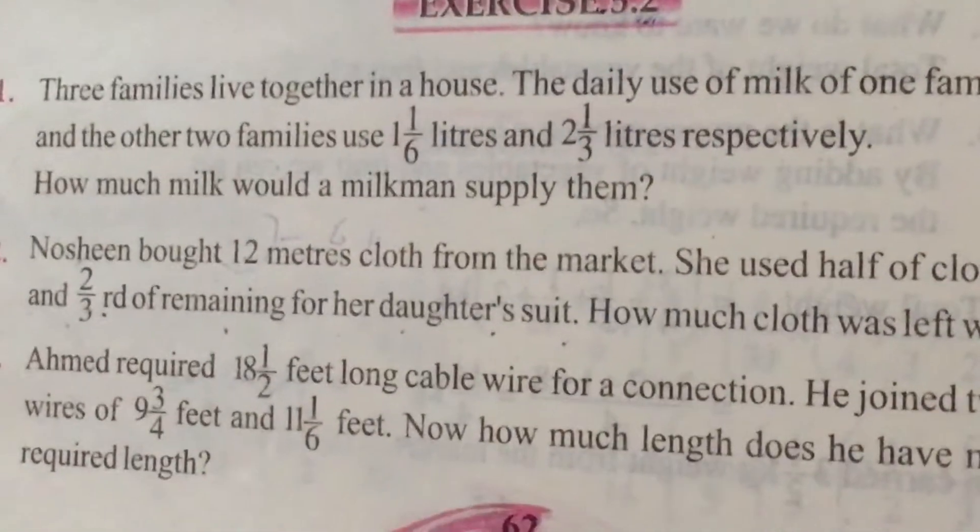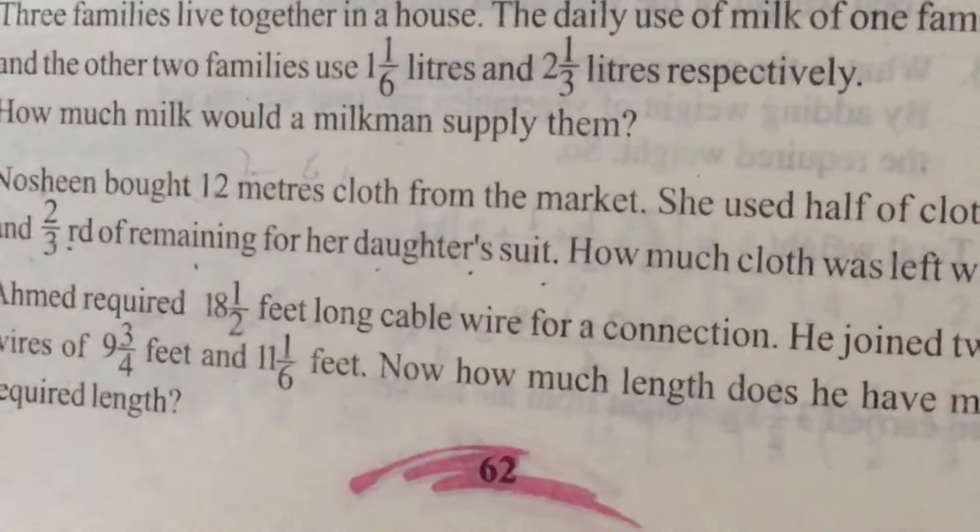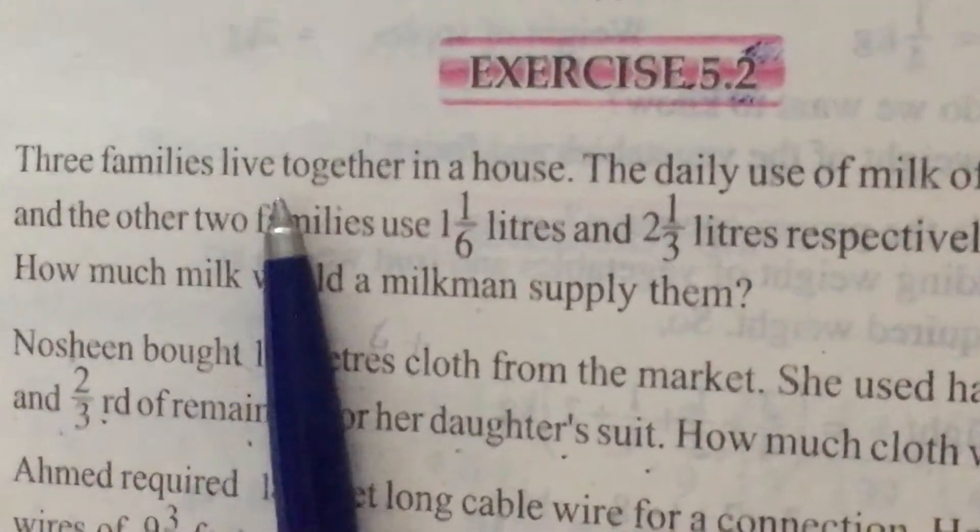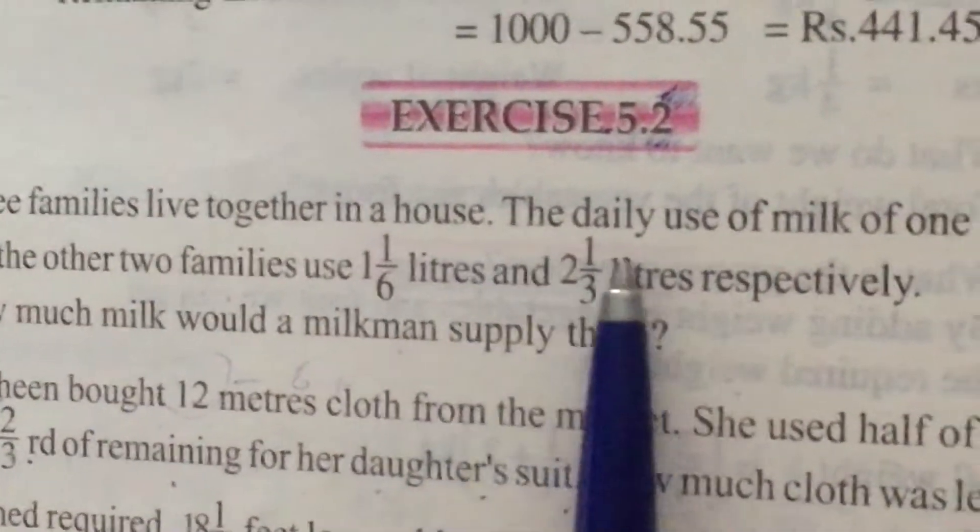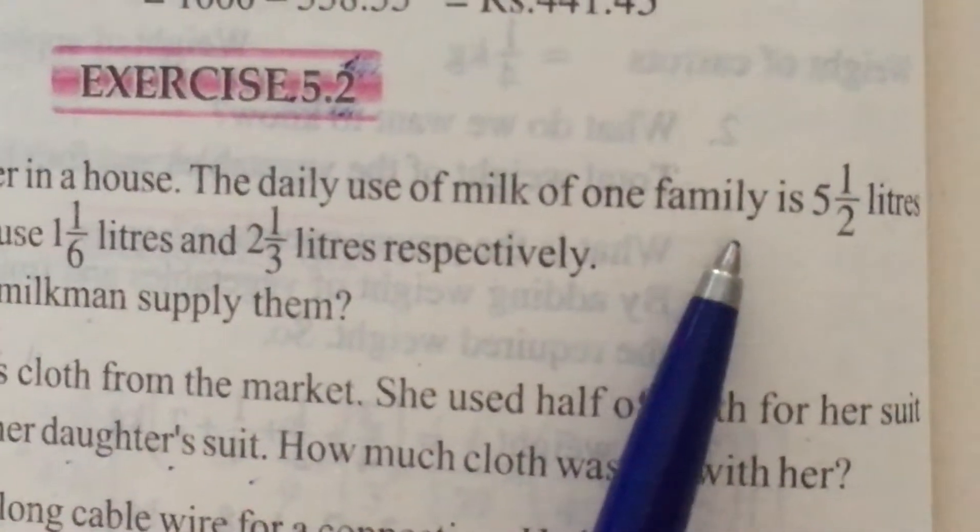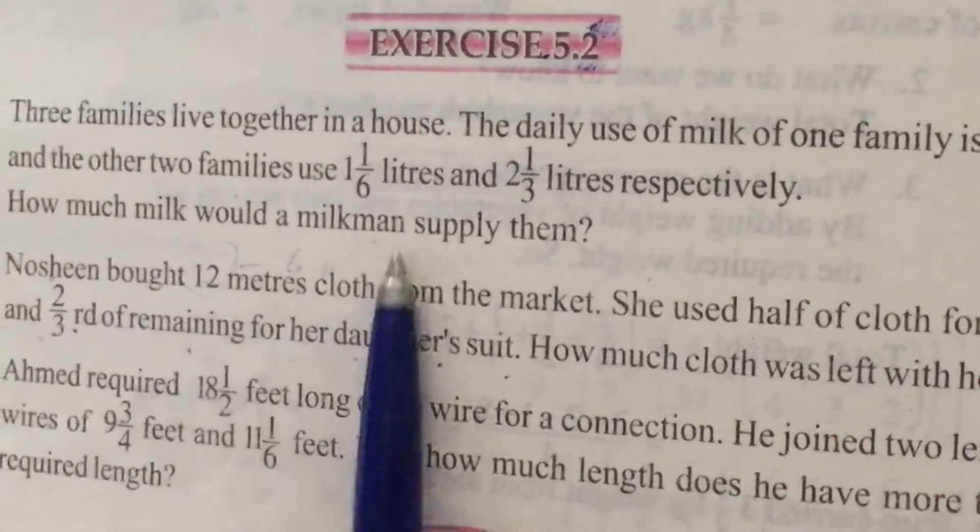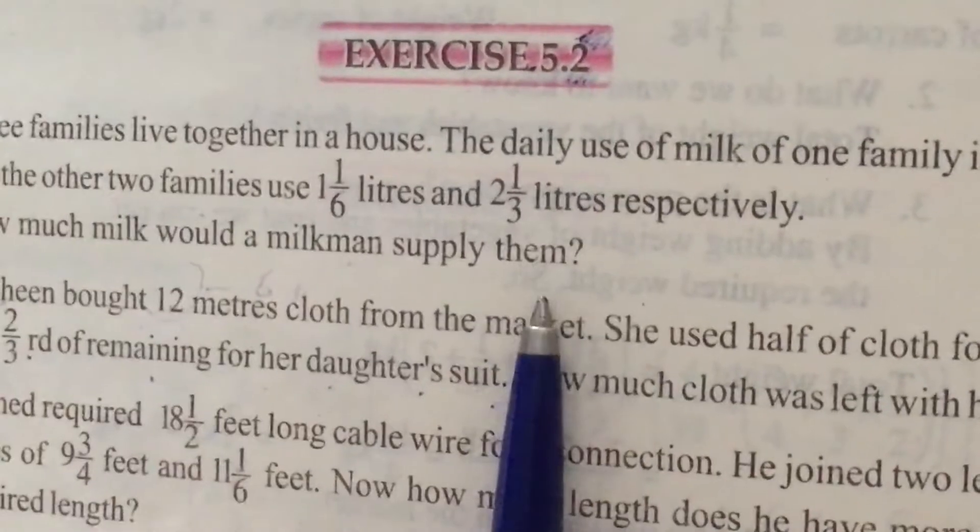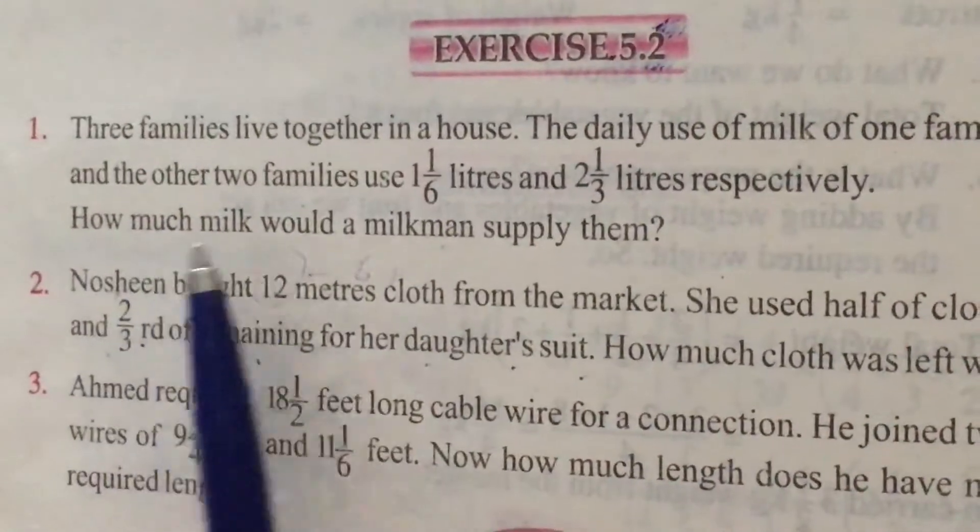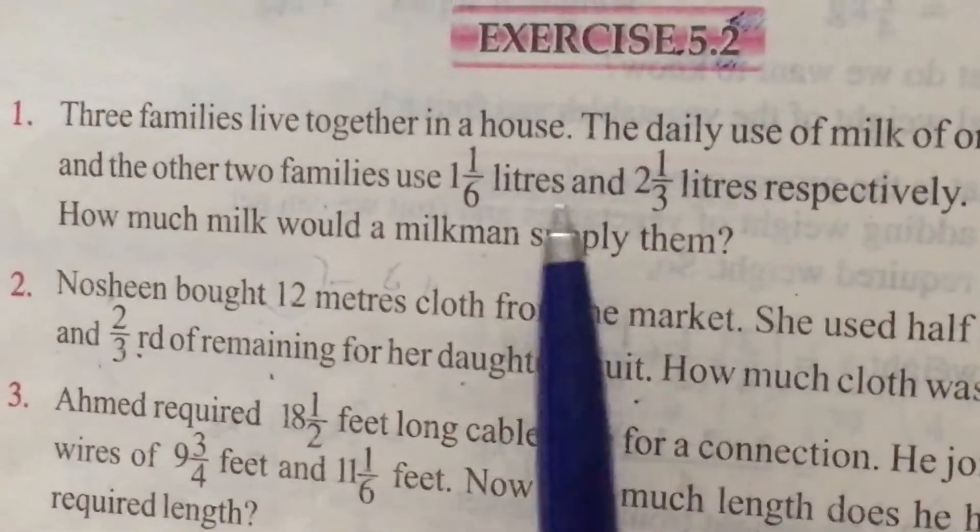First question is: three families live together in a house. The daily use of milk of one family is 5 1/2 liters and the other two families use 1 1/6 liter and 2 1/3 liters respectively. How much milk would a milkman supply them?